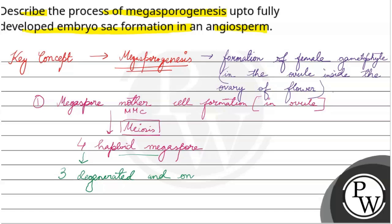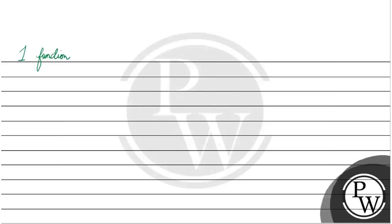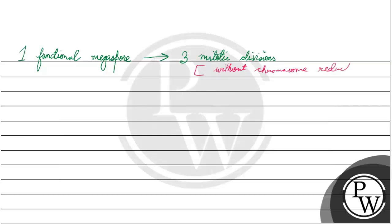Only one remains functional — one haploid megaspore. Then this one functional megaspore undergoes three mitotic divisions, where you have to remember that there is no chromosome reduction. Without chromosome reduction, it undergoes three mitotic divisions and forms a seven-celled, eight-nucleated structure of the embryo sac.